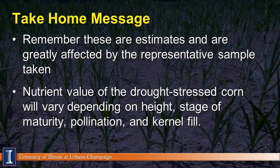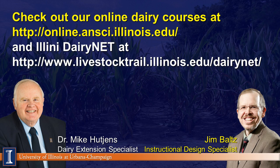So let's take a look at our take-home messages. First, remember these are only estimates and are greatly affected by how we take the sample and which field areas we sample — we can really bias our answers. These fields vary all over the map depending on soil types, topography, and when rains came through. Be aware that even with yield estimates, the value of those nutrients will be quite variable depending on height, stage and maturity, when the plant stopped growing, whether it pollinated, and what percent of kernels actually filled. If you found this information useful, visit us — we have dairy courses coming in fall 2012, and additional dairy information on our website, DairyNet.